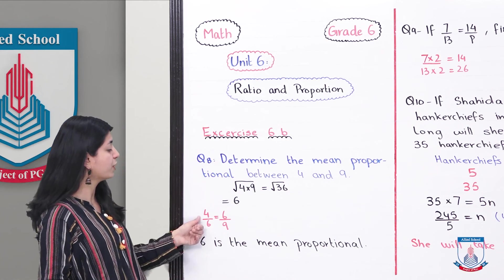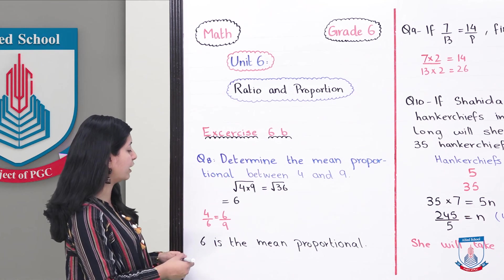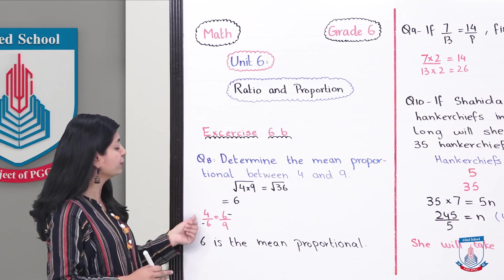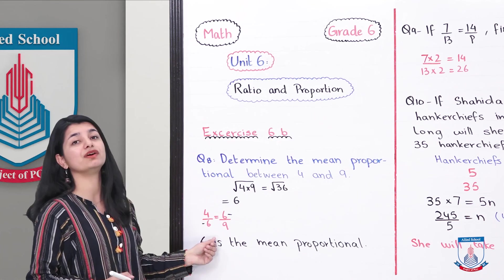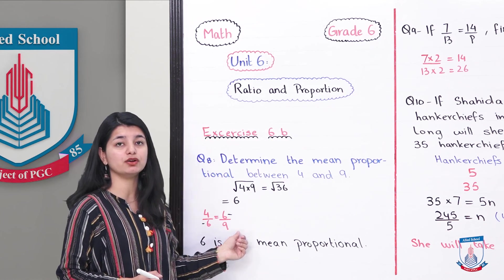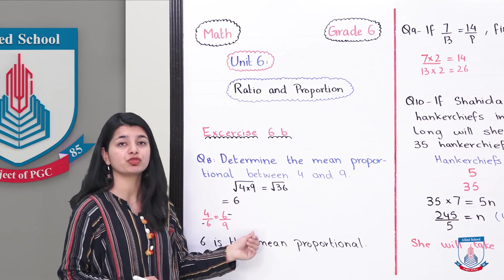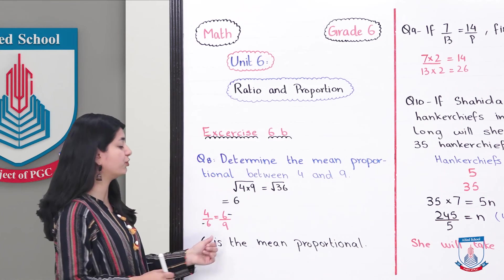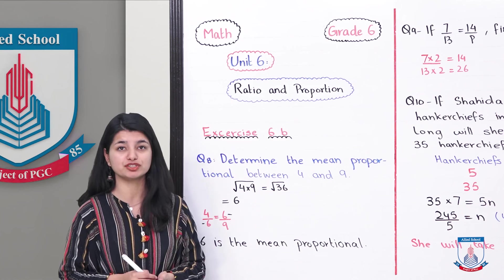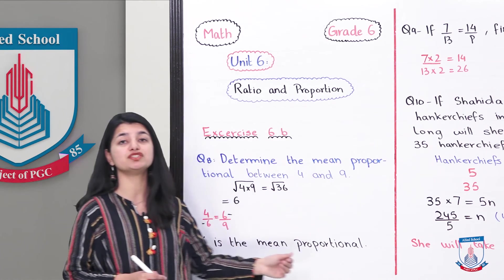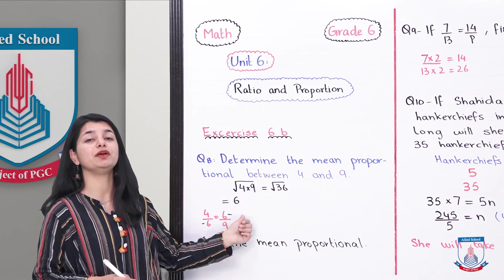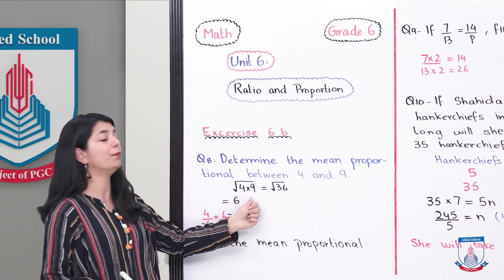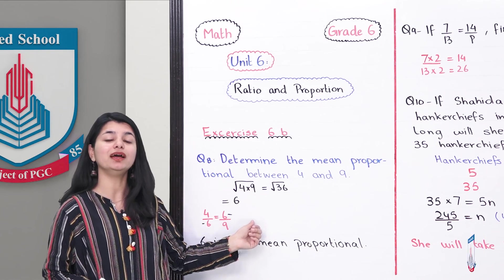Looking at it in fraction form, you can see that 4 over 6 equals 6 over 9. This confirms that 6 is the mean proportional. If you simplify, both 4/6 and 6/9 reduce to 2 over 3, so both are equivalent ratios. Therefore, 6 is the mean proportional. For any such question, multiply the two extreme values and take the square root — that answer will be your mean proportional.